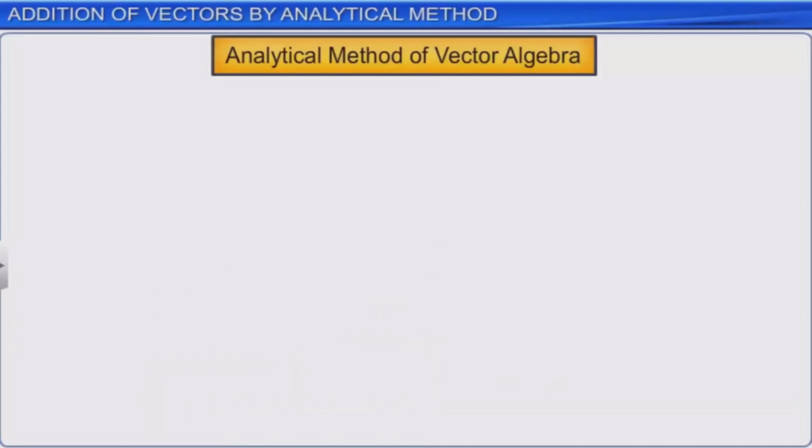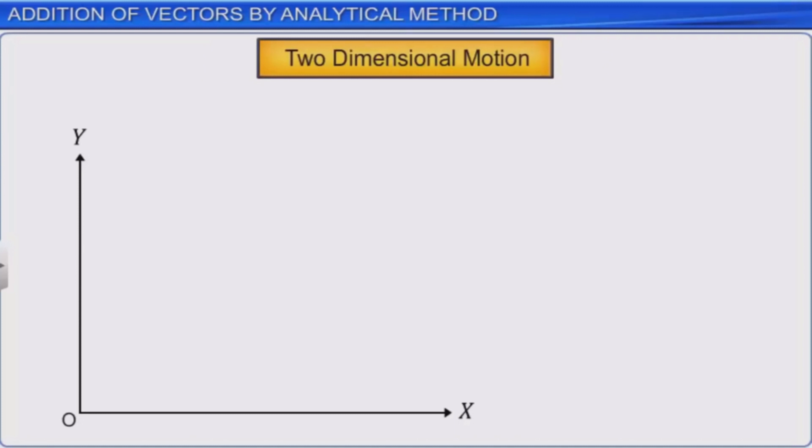Now let's see how vectors are added by the analytical method. First we will discuss vector addition for planar motion or two-dimensional motion. When dealing with planar motion or two-dimensional motion, you need to resolve the given vector along i and j only.